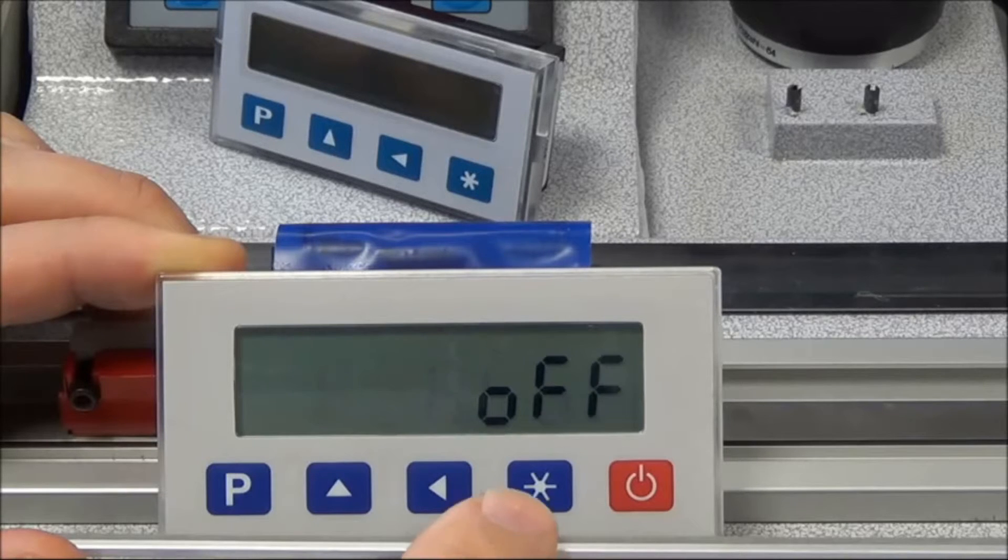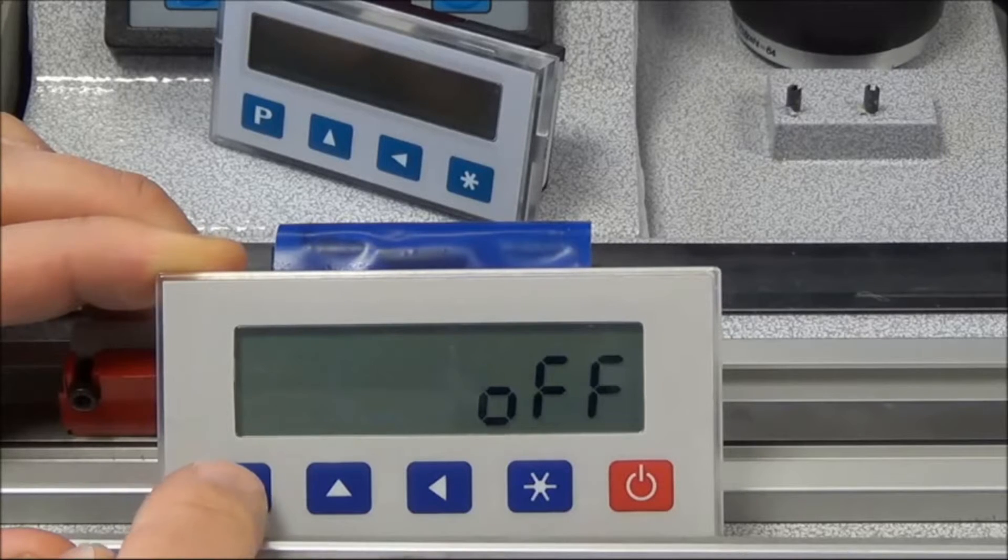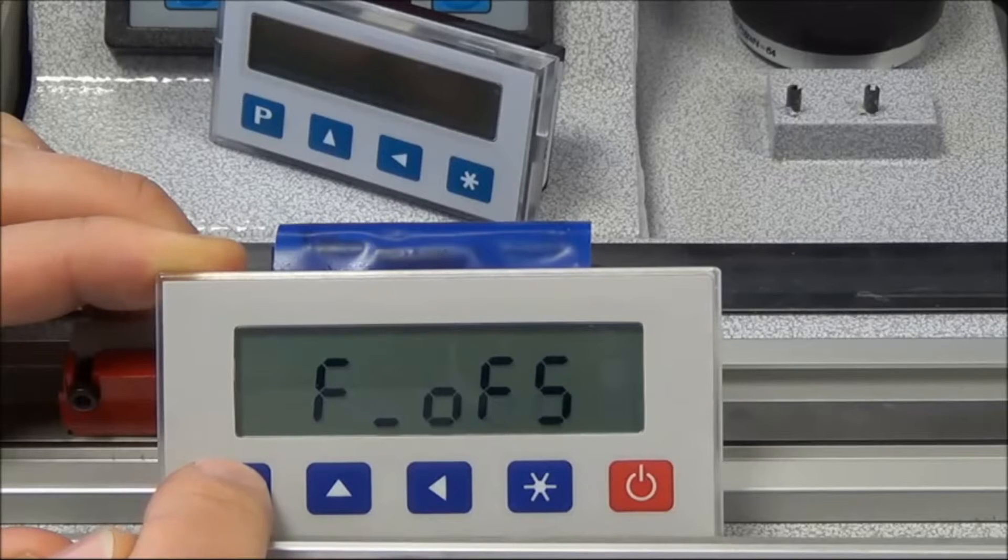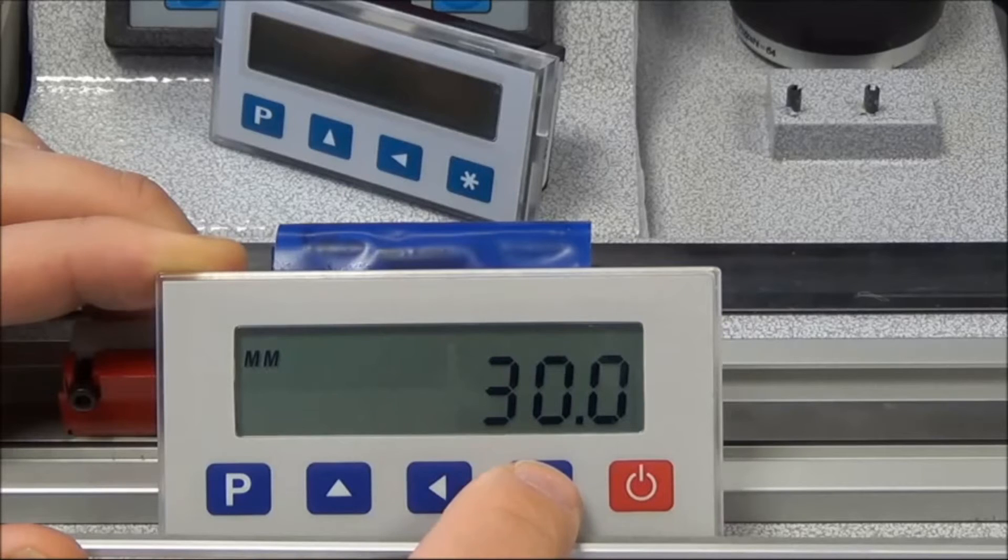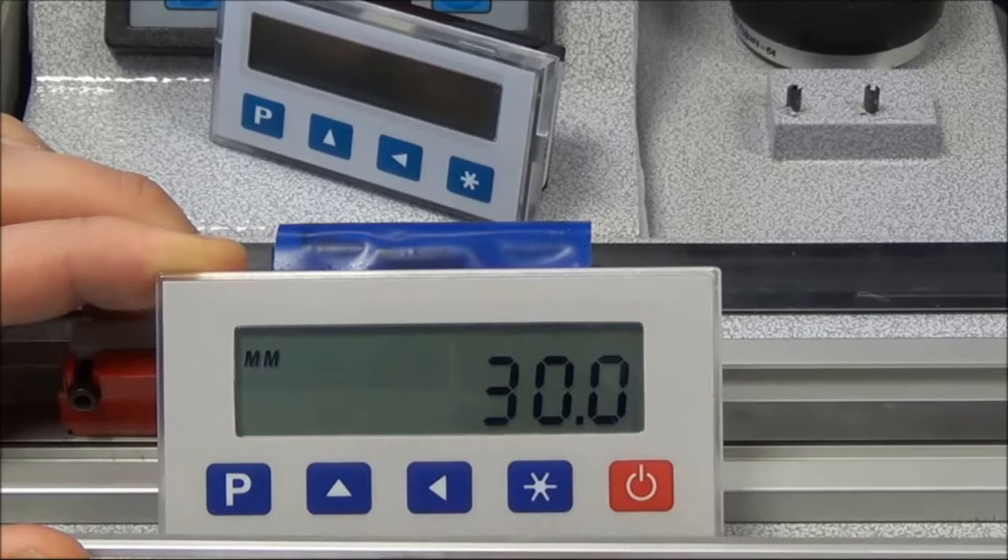And now as we come back out, we'll show the current value because the sensor hasn't moved along the axis. When we press the star button again, we don't know if there's been any change made.